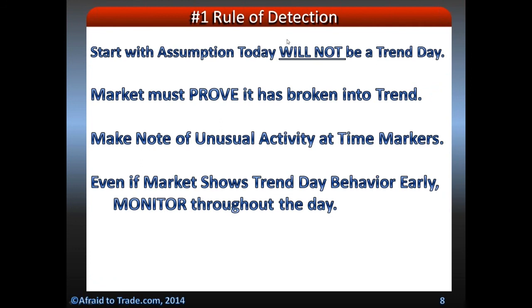The number one rule of detection: assume that today will NOT be a trend day. Nothing will happen — assume the null hypothesis. The market must prove to you, with certain quantifiable things on a checklist, that it has actually broken into a trend or breakout movement. You'll do that by making note of unusual, strange, or quantifiable metrics at certain points of the day. Volume, momentum, range, etc. Even if the market shows a trend initially, you must monitor it throughout the session. Trends can continue, but there are rounded reversals where a trend will actually fail.